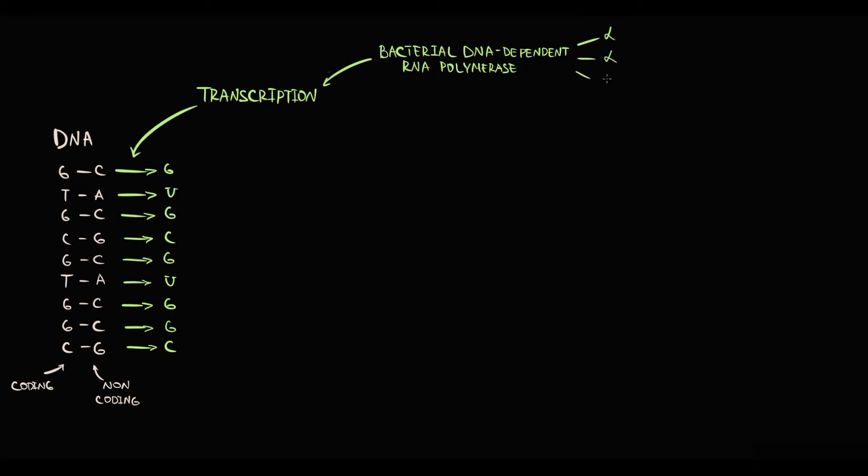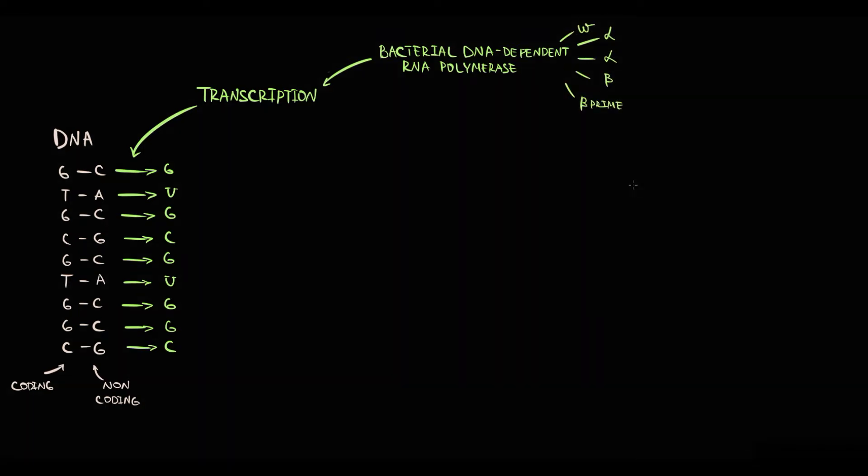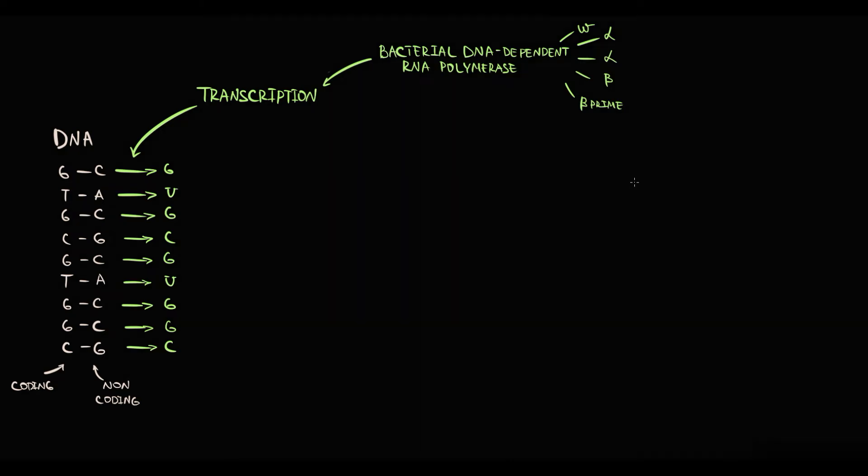Bacterial DNA-dependent RNA polymerase consists of five major subunits: two alpha, one beta, one beta prime, and one omega. DNA-dependent RNA polymerase uses nucleotides complementary to the DNA non-coding strand, and this results in production of pre-mRNA molecule.